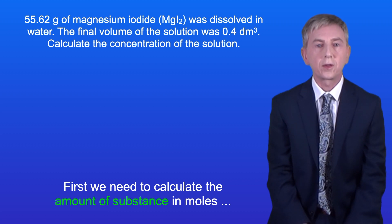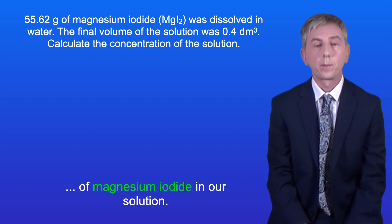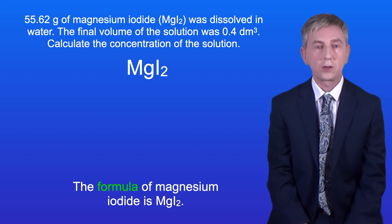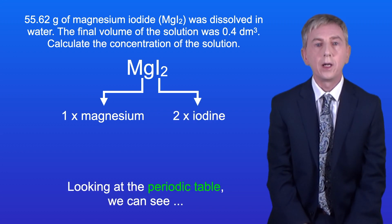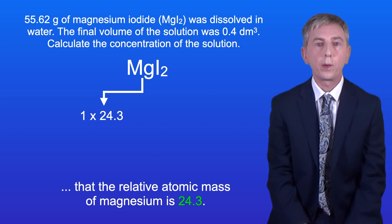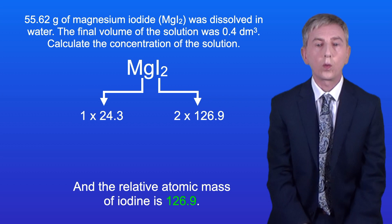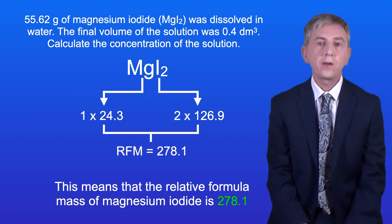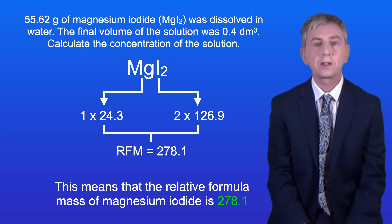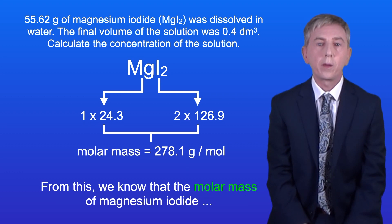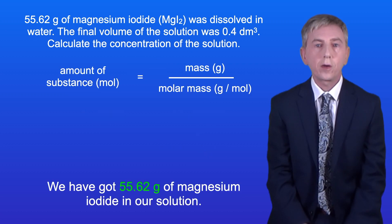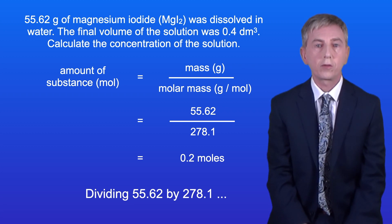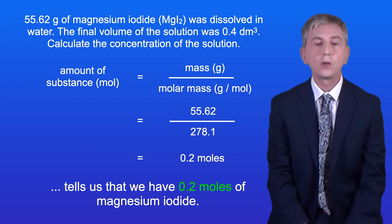Okay, first we need to calculate the amount of substance in moles of magnesium iodide. The formula of magnesium iodide is MgI₂, so this chemical has one atom of magnesium and two atoms of iodine. From the periodic table, the relative atomic mass of magnesium is 24.3 and the relative atomic mass of iodine is 126.9. This gives a relative formula mass of 278.1, so the molar mass is 278.1 grams per mole. Dividing 55.62 by 278.1 tells us that we have 0.2 moles of magnesium iodide.